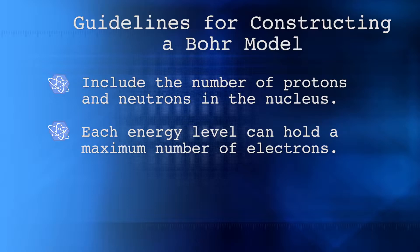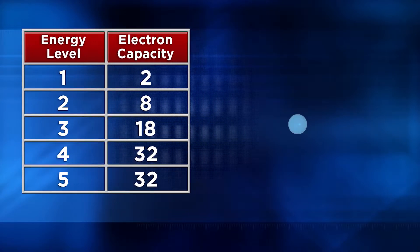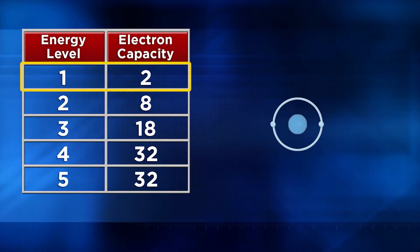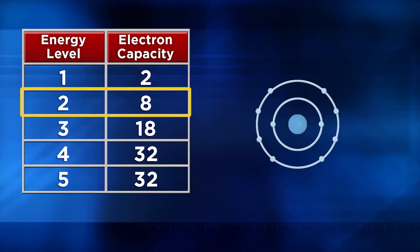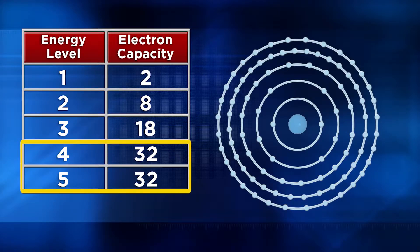Each energy level can hold a maximum number of electrons. This table shows the maximum number of electrons for each energy level. The first energy level, closest to the nucleus, can only hold up to 2 electrons. The second energy level can hold up to 8. The third energy level can hold up to 18 electrons, and the fourth and fifth energy levels can hold up to 32 electrons. Larger atoms with more electrons can exist, but these five levels are all you need to understand the naturally occurring elements found on Earth.